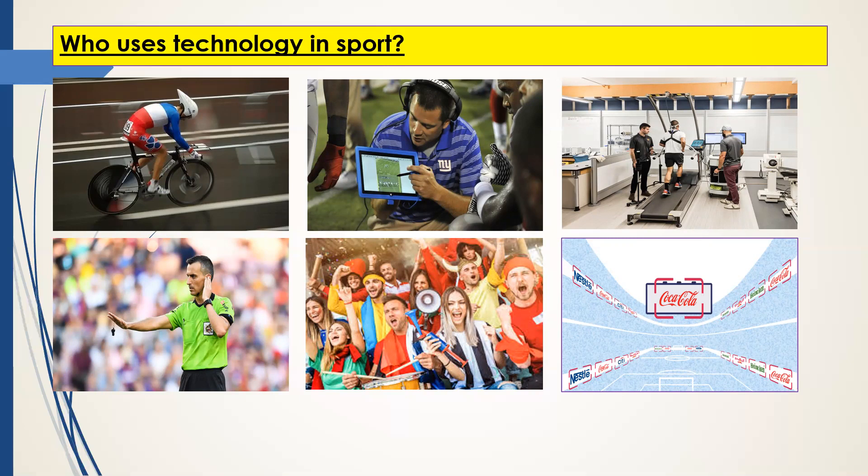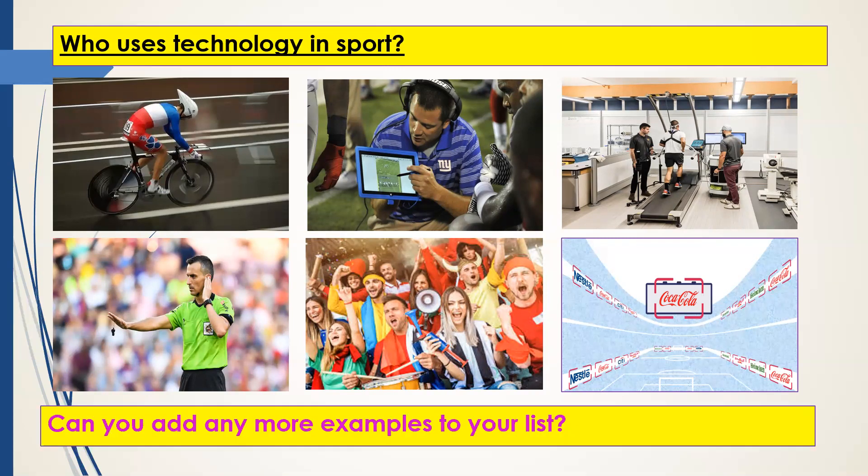To confirm, we've got athletes and performers, coaches and trainers, scientists and analysts, officials, spectators, and sponsors. Each of those is heavily linked into technology and sport, so make sure you've got that listed down. Once you've done that, can you add any more examples to your list? Go through each of those groups of individuals — how do they each use technology in sport?